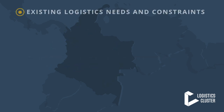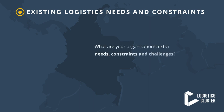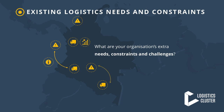The third element of the GNA builds a map of the existing logistics challenges through understanding what your organization's extra needs, constraints, and challenges are. The objective is to understand the most critical logistics issues currently affecting the delivery of relief assistance from the point of entry to the final distribution point. For example, you might need extra capacity for primary road transport, or have limited access to information on local and international providers for selected items.